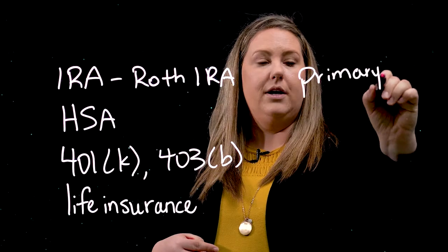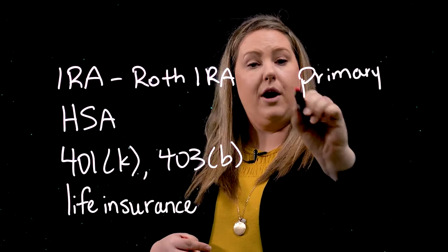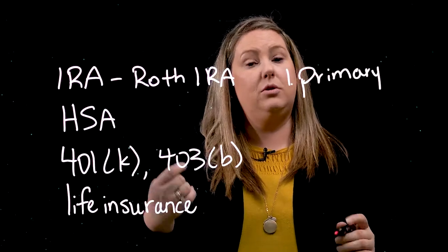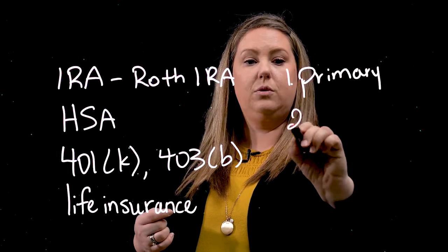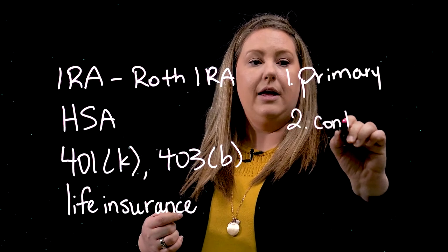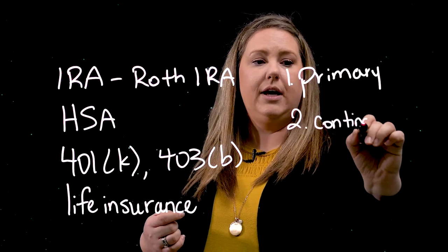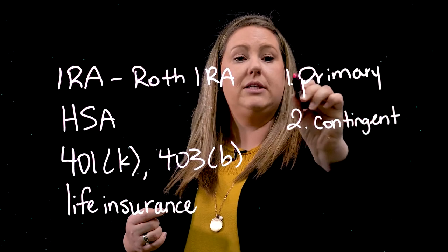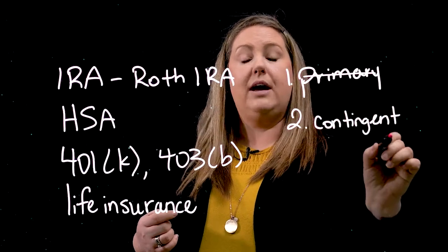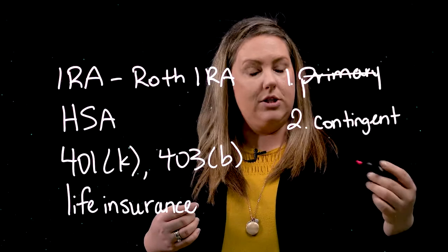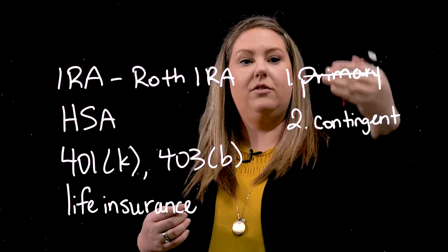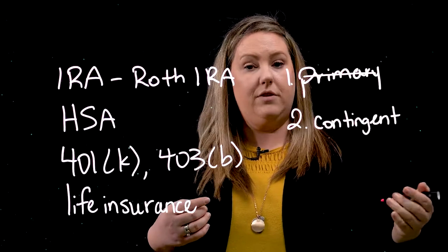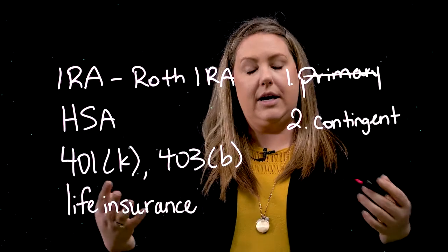What you're checking for is that you have a primary beneficiary — this means if something happens to you, this is the first person who will inherit these assets. Then, just in case this primary person predeceases you, you need to have a contingent beneficiary, which means if that person is no longer living, the contingent beneficiary will inherit these assets.